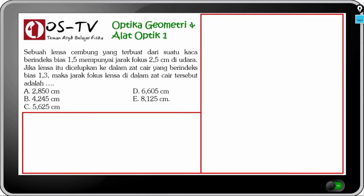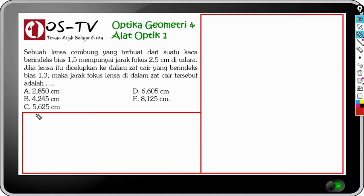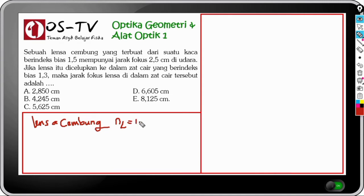Di layar tampil sebuah soal yang menyebutkan bahwa sebuah lensa cembung yang terbuat dari kaca berindeks bias 1,5 mempunyai jarak fokus 2,5 cm di udara. Jika lensa itu dicelupkan ke dalam zat cair yang berindeks bias 1,3, maka jarak fokus lensa di dalam zat cair tersebut adalah? Mari kita identifikasi soal ini. Kita diberikan informasi bahwa terdapat lensa cembung dengan indeks bias NL = 1,5.